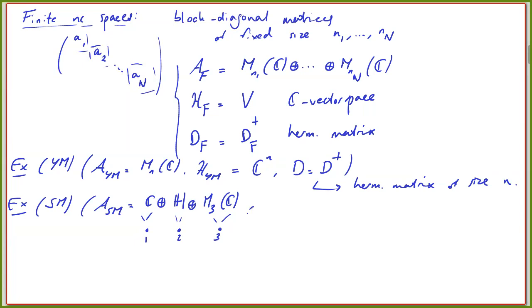Think of this as: C describes the U(1) hypercharge, H corresponds to the weak interaction, so the SU(2) component, and M₃(C) is the SU(3) component of the standard model. So if you know a little bit of particle physics, that's what you're trying to describe here.